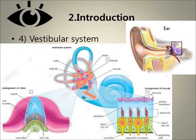The vestibular system lies in the inner ear. It is the sensory system that provides a sense of balance, sense of gravity, and orientation for coordinating movements with balance. It helps us stay upright when standing, helps us walk, run, and move without falling. It consists of three semicircular canals that contain fluid and sensors that detect rotational movement of the head.